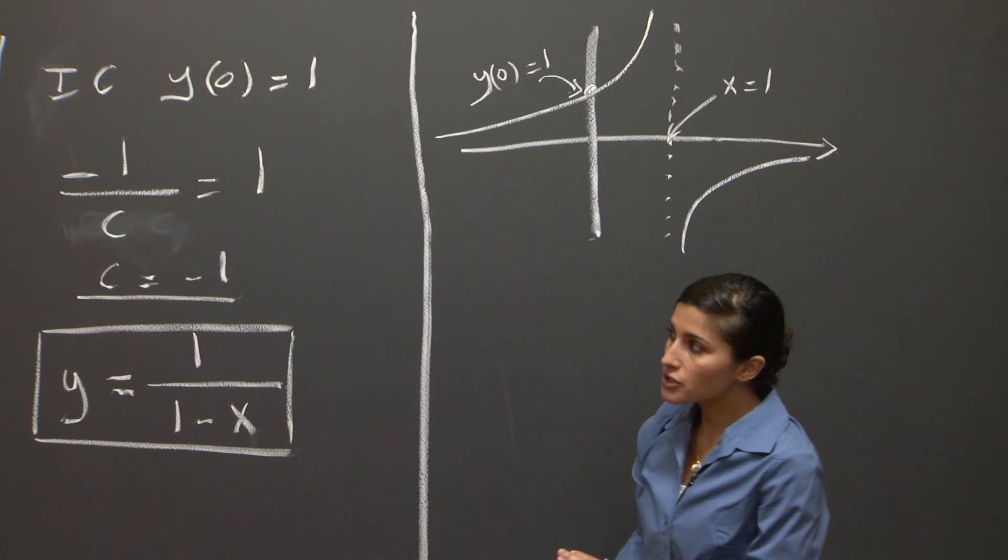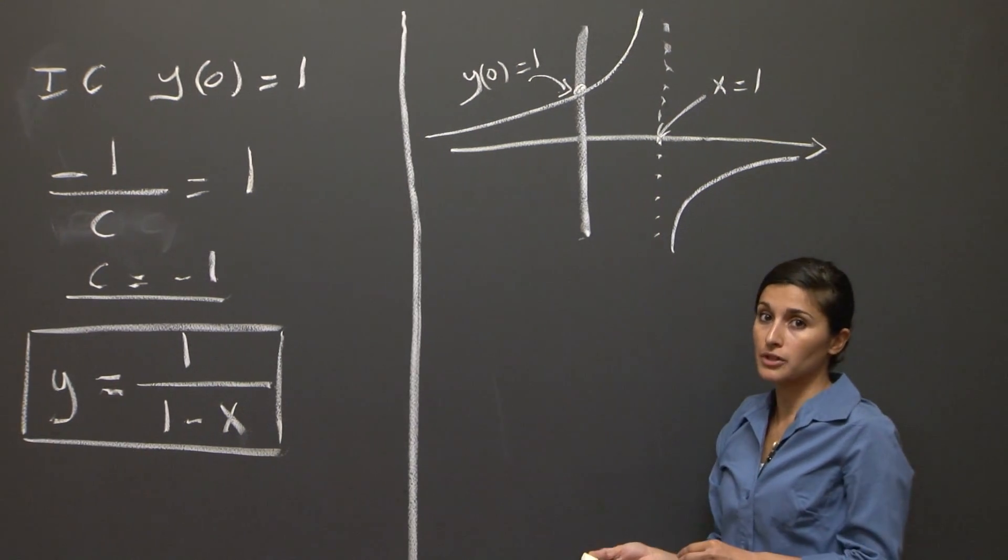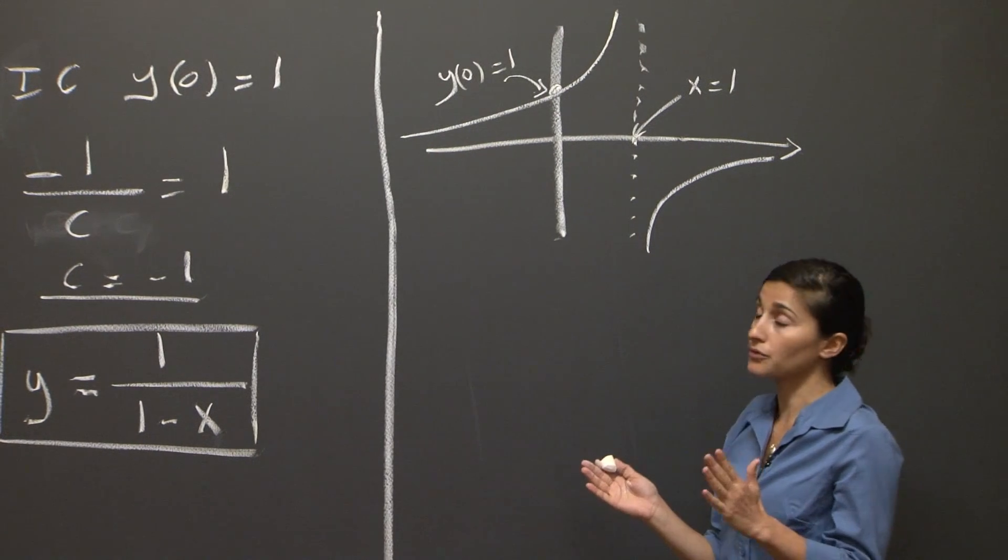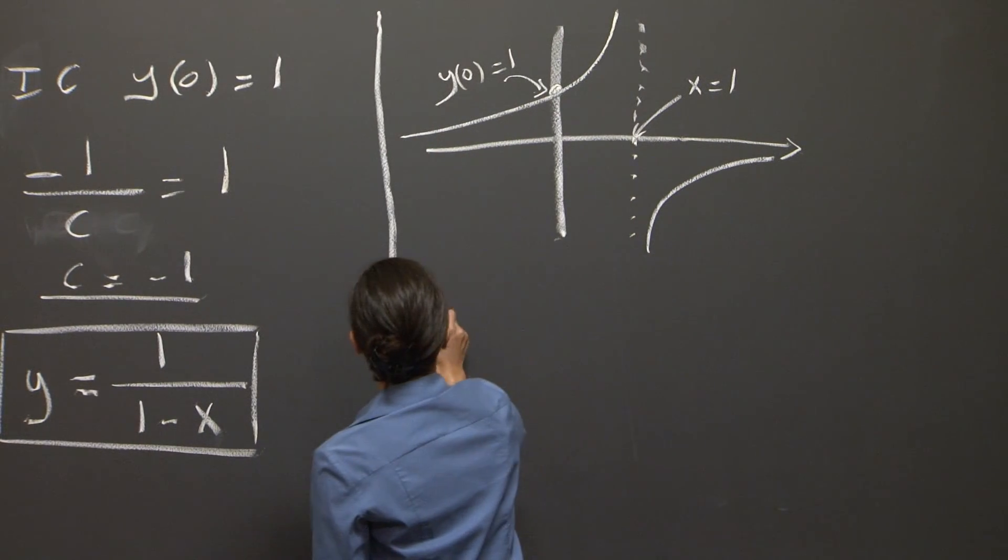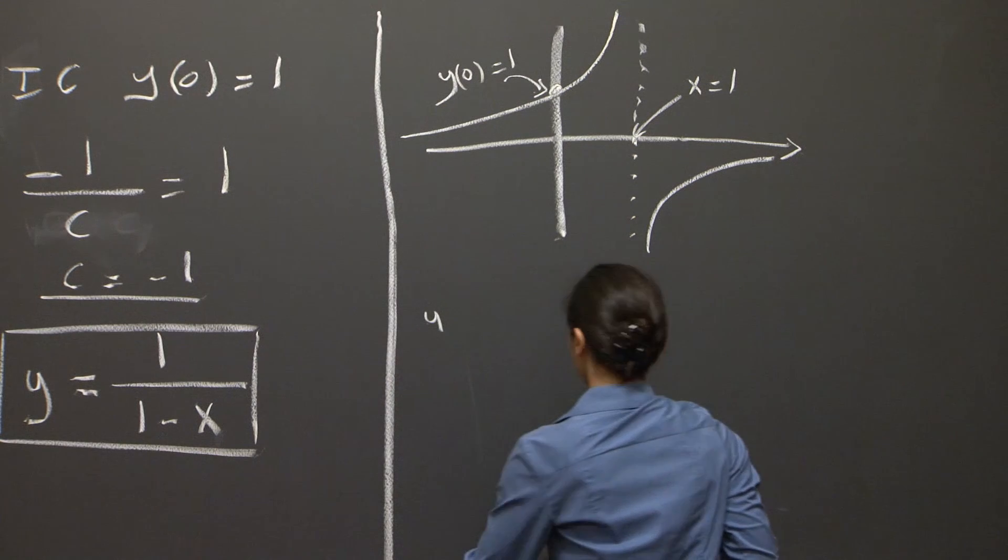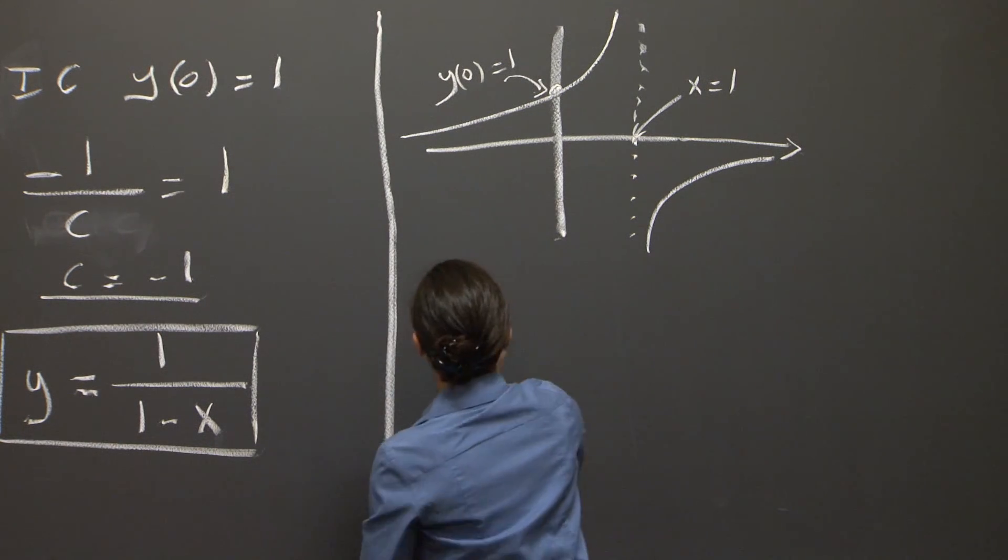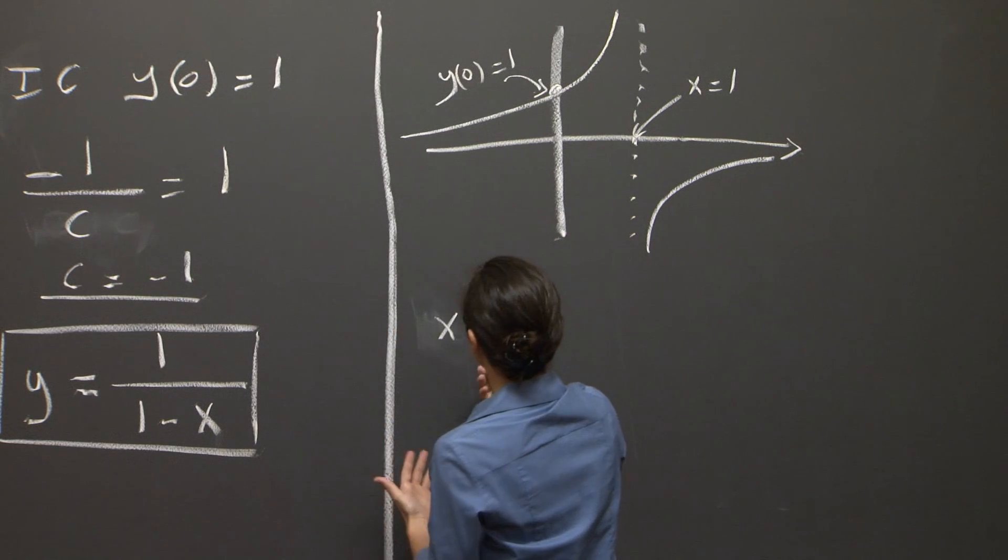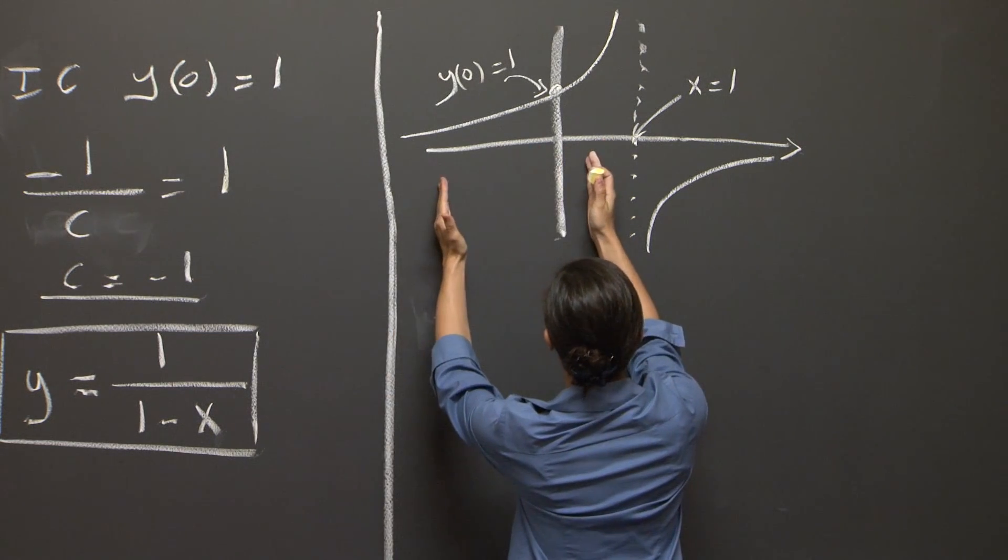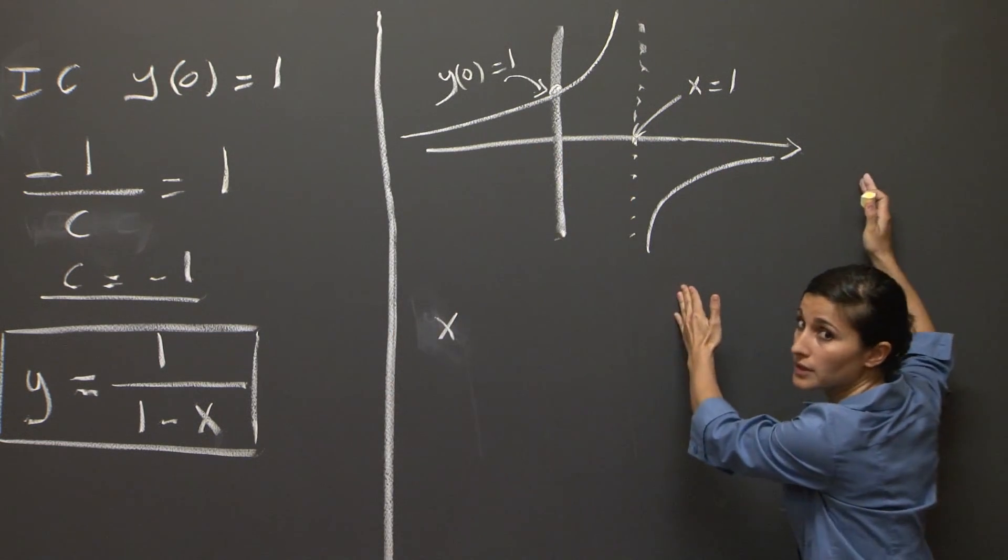By convention, the solutions of differential equations are defined on one single interval. So we need here to realize that the solution we had is basically two parts: the part on the left of the asymptote and the part on the right of the asymptote.